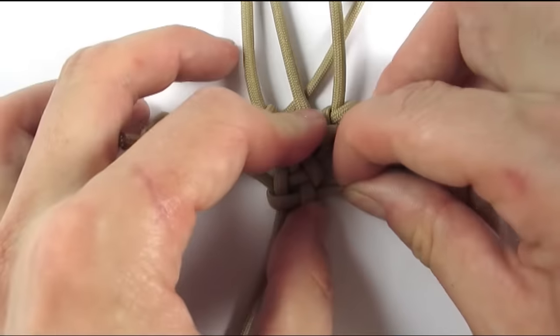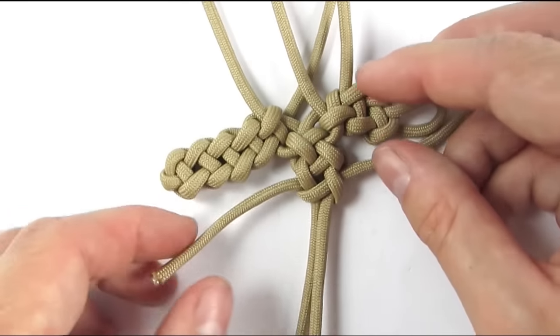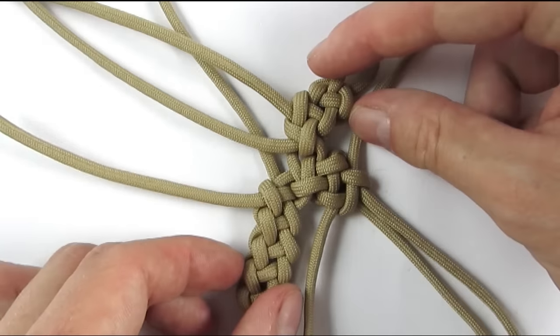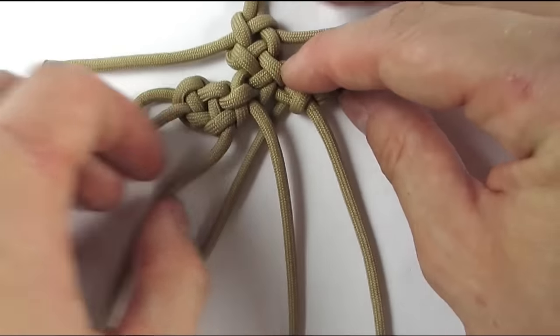So by tying the second vertical crown knot, we have three knots and we can now move on to the other side and make three knots as well.